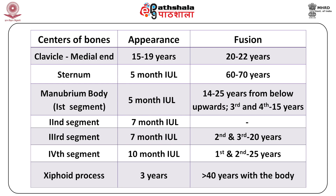The various segments of the manubrium body fuse from below upwards at the age of 14 to 25 years. Specifically, the third and fourth segments fuse first at around age 15, the second and third segments fuse at around age 20, and the first and second segments fuse last at around age 25. The xiphoid process ossification center appears at the age of three years and it fuses with the body at around 40 years or more.